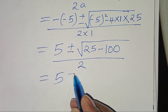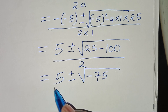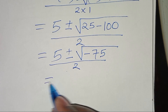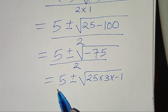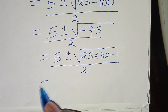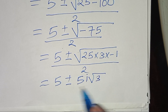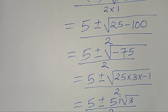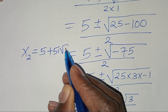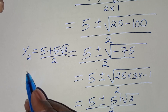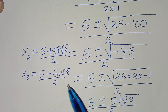Simplifying: 5 squared is 25, and 4 times 25 is 100. So we have 5 plus or minus the square root of 25 minus 100, which equals negative 75, divided by 2. We express negative 75 as 25 times 3 times negative 1, so the square root gives 5i√3. Therefore x₂ equals (5 + 5i√3) / 2, and x₃ equals (5 - 5i√3) / 2.